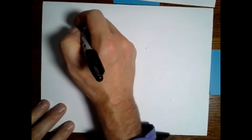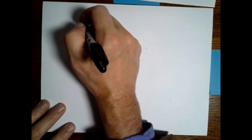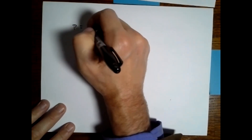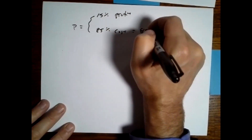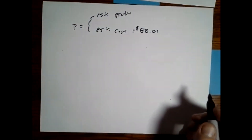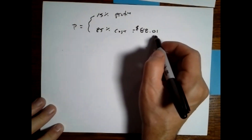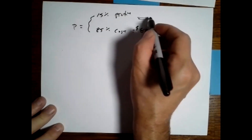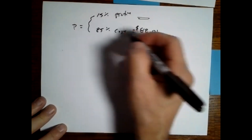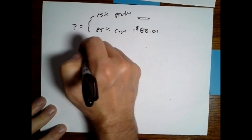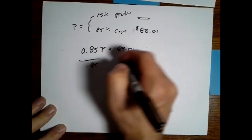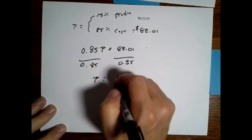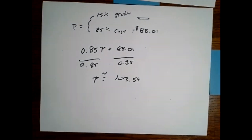Problem eleven says assume a full price will include 15% profit — what would the full price of a CT be? If there's 15% profit, then 85% is cost. We know the cost is approximately $88.01. So 0.85P equals $88.01. Dividing through by 0.85, we get P equals approximately $10,354. The other problems are on the other video, so both will be posted so you can look at them.